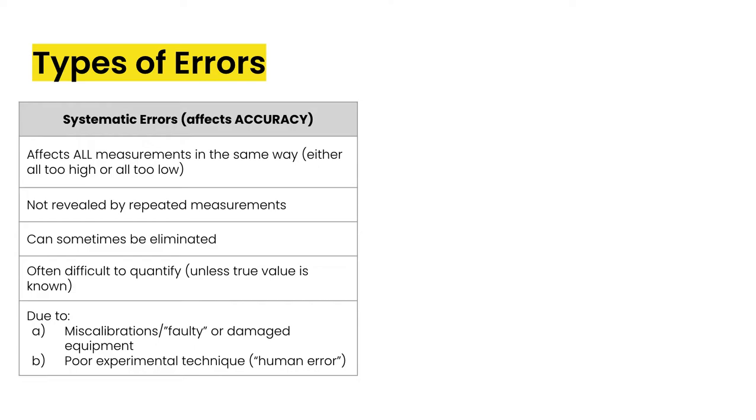It is not revealed by repeated measurements, which means we can do as many trials as possible and we would never see this error being revealed to us in those measurements. Sometimes you can eliminate them, but the problem with that is that they're really difficult to quantify and they're difficult to see unless you know that they are there and they are valid forms of errors.